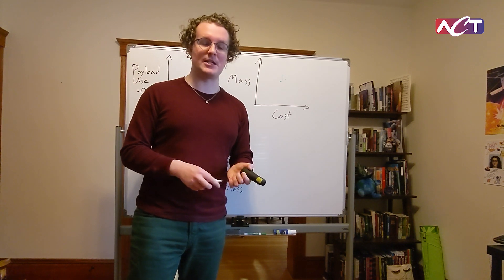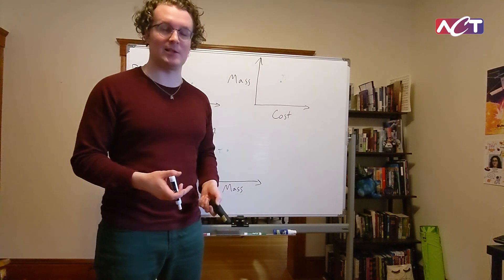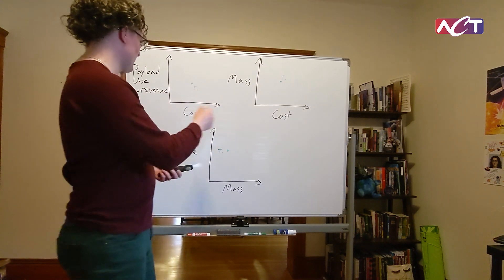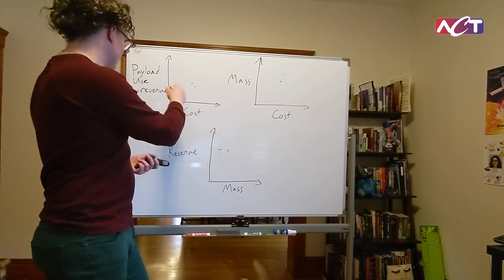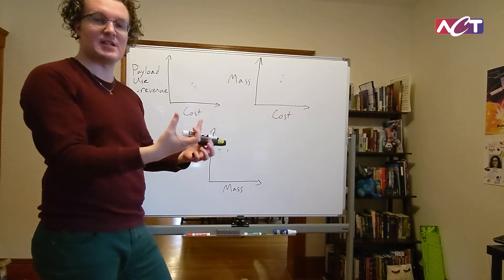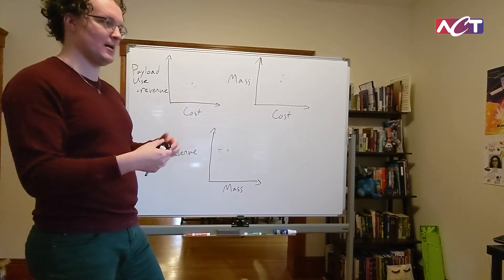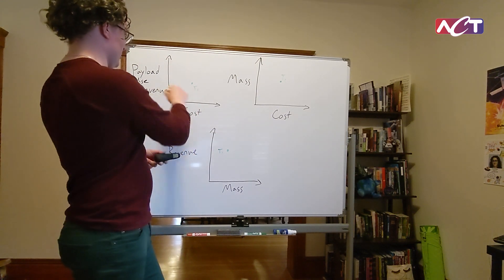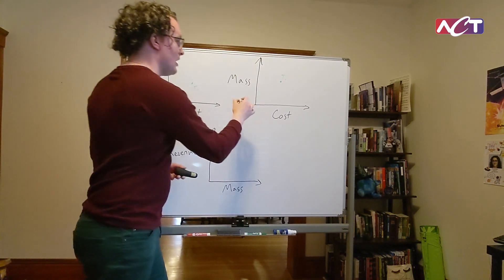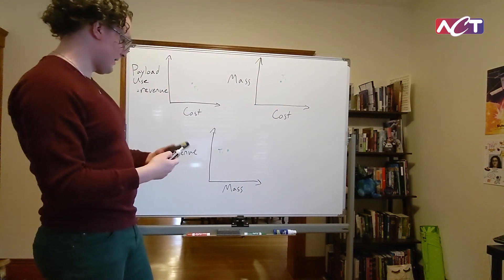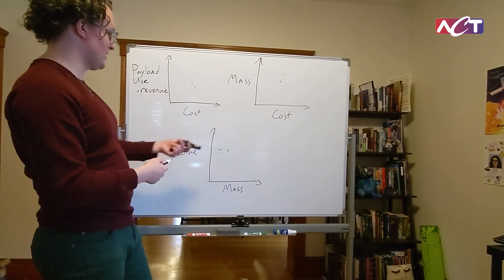So I drew some graphs here to illustrate the trade-off concept a little bit. So this design point that we're talking about here, we can graph it with cost, maybe radiator quality, versus how much payload use, how often you can use the payload, how high power you can use the payload, and maybe translating into revenue. So here it is on that set of axes, cost versus mass, mass of the radiator of the cooling system, and then mass versus that same revenue metric here.